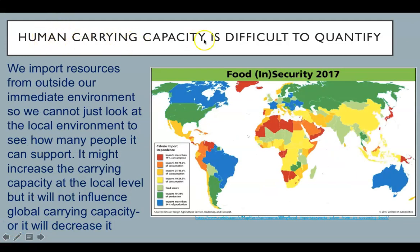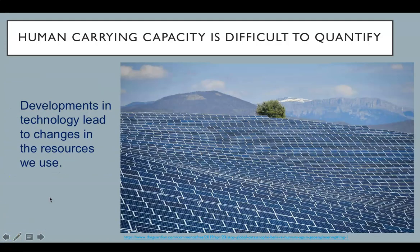Another reason human carrying capacity is difficult to quantify is that we import resources from outside our immediate or local environment. So we cannot just look at the local environment to see how many people it can support. It might increase the carrying capacity at a local level, but it will not influence global carrying capacity — or it might decrease it. If the United States imports 10 to 30% of its food, that allows more people to live in the area; however, that food comes from somewhere else in the world, thus affecting the global carrying capacity.